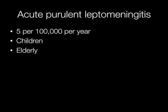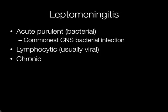The population most at risk of acute purulent meningitis are children and the elderly, and it affects approximately five per hundred thousand per year. There are broadly three main types of leptomeningitis: acute purulent or bacterial meningitis, which is the commonest cause of CNS bacterial infection; lymphocytic leptomeningitis, which is usually viral; and chronic leptomeningitis, which may be caused by organisms such as TB and cryptococcus.